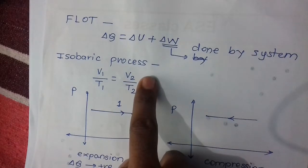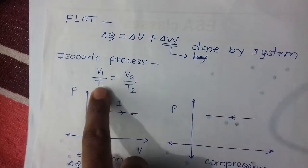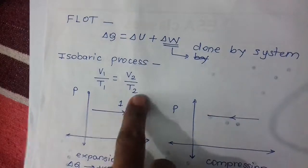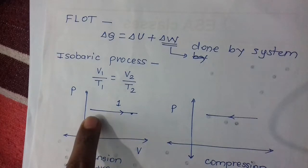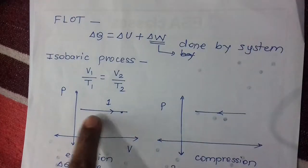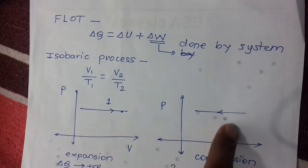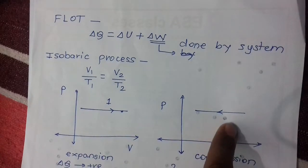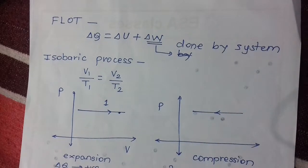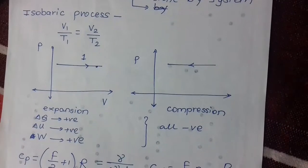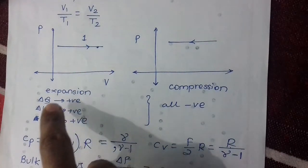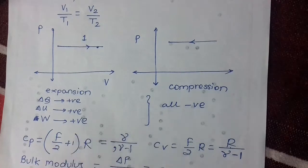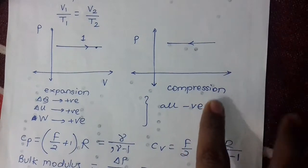Isobaric process: pressure remains constant. On the indicator diagram, pressure is constant while volume is increasing (expansion) or decreasing (contraction). For expansion, ΔQ, ΔU, and ΔW are all positive, and for compression all are negative.